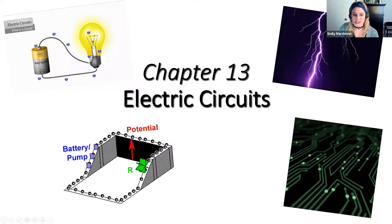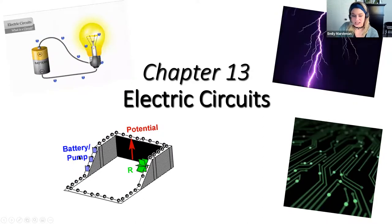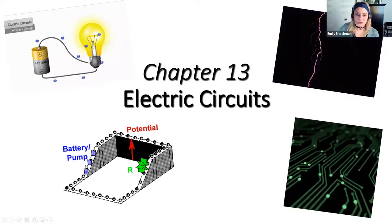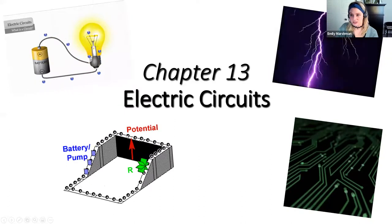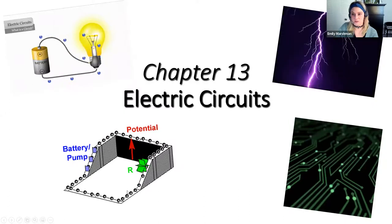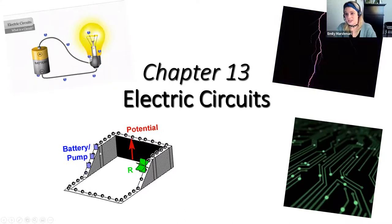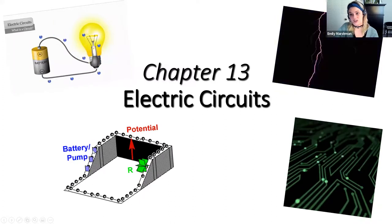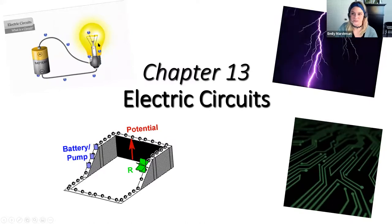In a simple circuit with a battery connected to a light bulb, the battery acts as a pump — it pumps electric charge and boosts its energy by giving it potential energy, as shown here. As the electric charge flows through the circuit, that potential energy is converted into other forms of energy like light energy or heat energy, and then the cycle starts all over again.